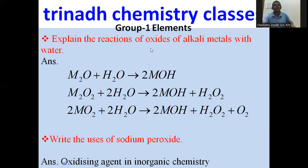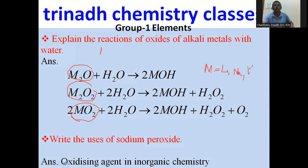Next: explain the reactions of oxides of alkali metals with water. Generally, alkali metals form three types of oxides: monoxides, peroxides, and superoxides. Monoxides on reaction with water, where M is the alkali metal - lithium only forms monoxides. Sodium in limited supply of oxygen forms monoxide, whereas in excess of oxygen it forms peroxide. Potassium, rubidium, and cesium only form superoxides.